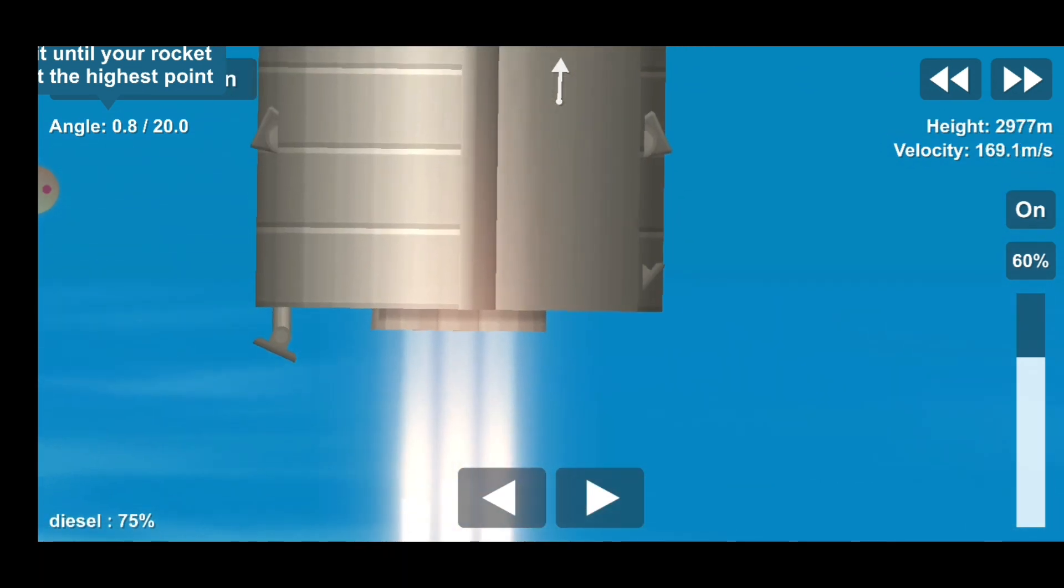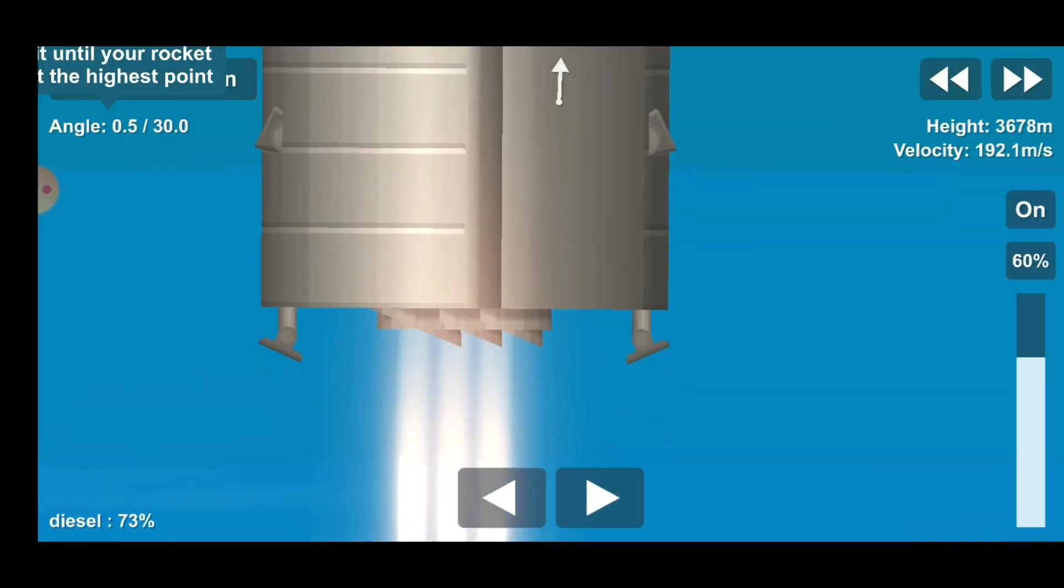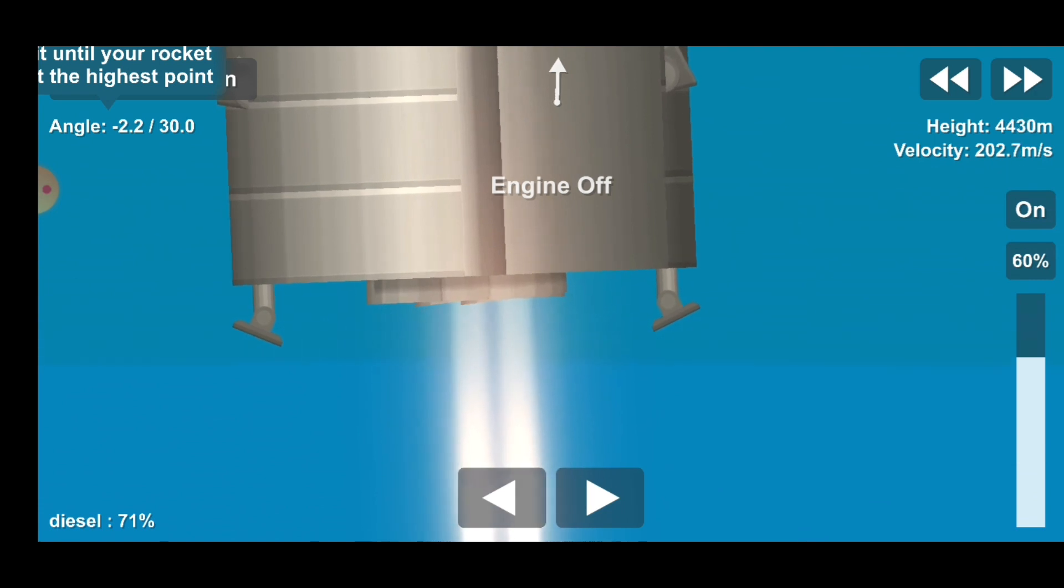Starship climbing to 10km altitude. Beyond the right shows three raptor engines burning. This flight to a 10km altitude, engine number three shut down on time as planned.